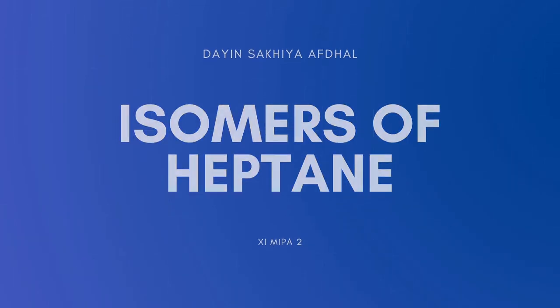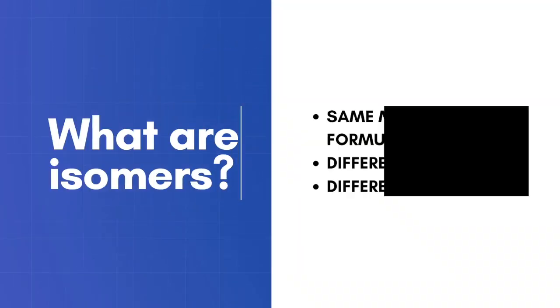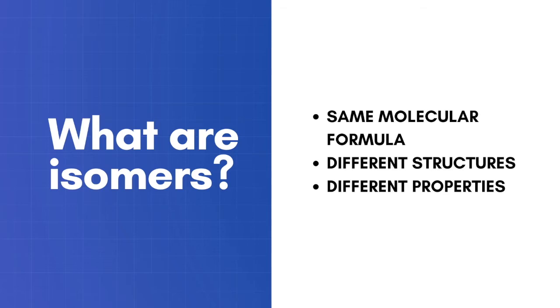Isomers are molecules of the same molecular formula but different structures. These different structures result in different properties.